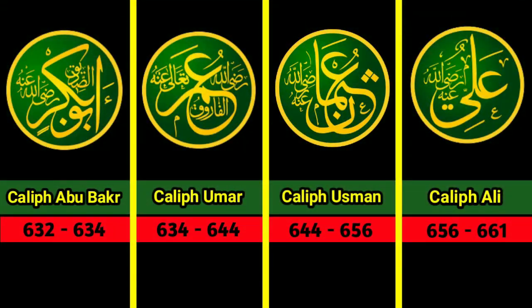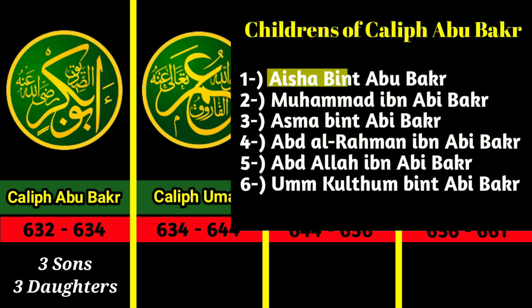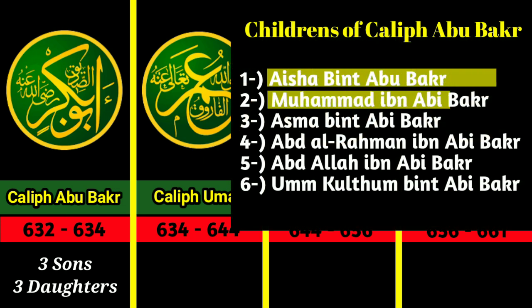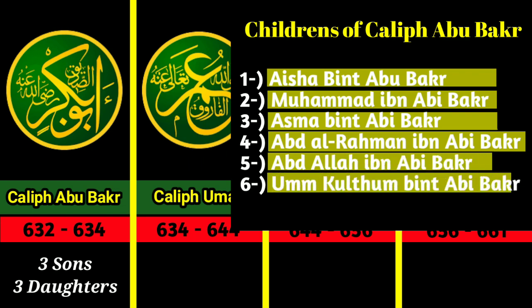The first caliph was Abu Bakr. He had a total of six children — three sons and three daughters. The names of his children were: Aisha bint Abu Bakr, Muhammad ibn Abi Bakr, Asma bint Abi Bakr, Abd al-Rahman ibn Abi Bakr, Abd Allah ibn Abi Bakr, and Umkultham bint Abi Bakr.